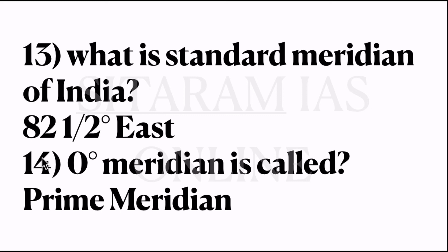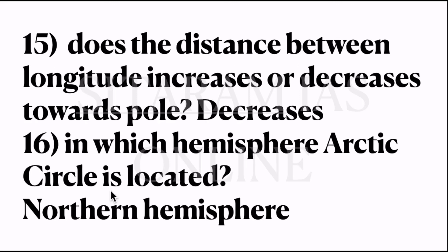Twelfth question: what is the angle of the Tropic of Capricorn? It is 23.5 degrees south. Thirteenth question: what is the standard meridian of India? It is 82.5 degrees east. Fourteenth question: 0 degree meridian is called the prime meridian. It is also called 0 degree longitude. Fifteenth question: does the distance between longitudes increase or decrease towards the pole? It decreases — the distance between longitudes decreases as we go towards the pole. Sixteenth question: in which hemisphere is the Arctic Circle located? It is in the northern hemisphere.